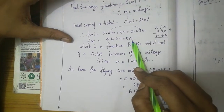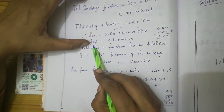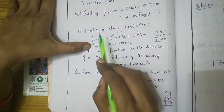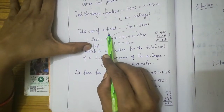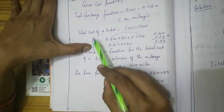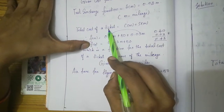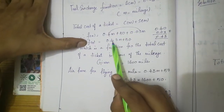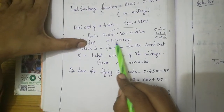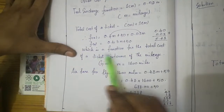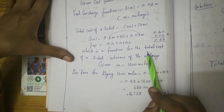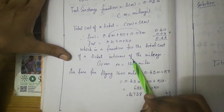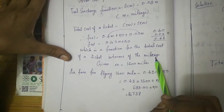This gives us the total cost of the ticket as a function of mileage — the function for the total cost of the ticket in terms of mileage.